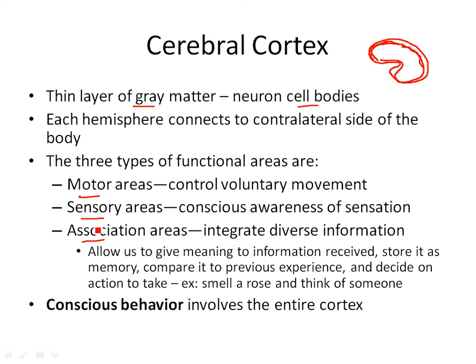Association areas mean you're bringing multiple types of sensations together and making a decision. For example, you smell a rose and think of someone. My great example: if I smell sweet potatoes, I think of my grandmother. So you have some kind of association where something elicits a memory or a reminder — you elicit some kind of memory due to a sensation. All your conscious behavior is in the cerebral cortex.